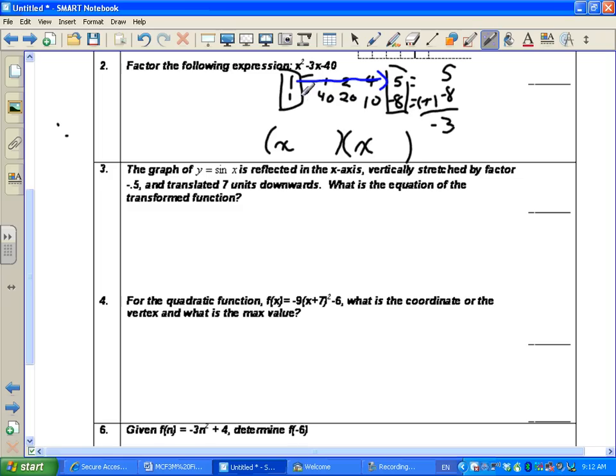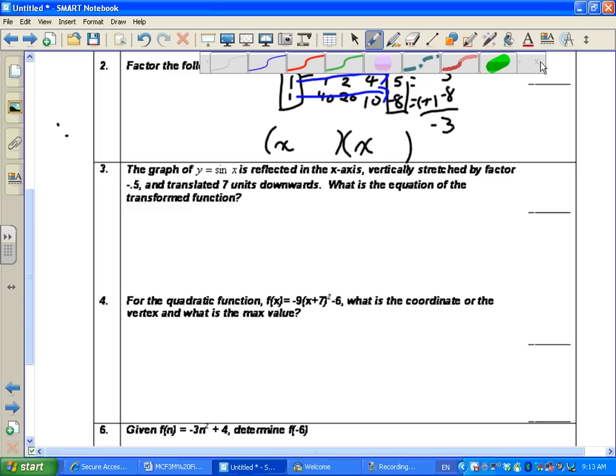When I go to put them into my brackets, I'm going to take my first terms first, which are 1x and 1x, so I can just write x and x as the first term. Since both numbers are the same, I'm just going to plug the number in. So in one of them I have positive 5 and the other one I have negative 8.